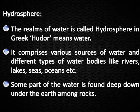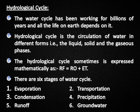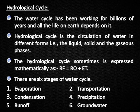Some part of the water is found deep down under the earth among rocks. The hydrological cycle has been working for billions of years and all life on earth depends on it. It is a circulation of water in different forms — liquid, solid, and gaseous phases. It is sometimes expressed mathematically as RF = RO + ET. There are six stages: evaporation, transportation, condensation, precipitation, runoff, and groundwater.